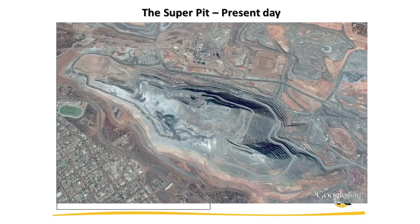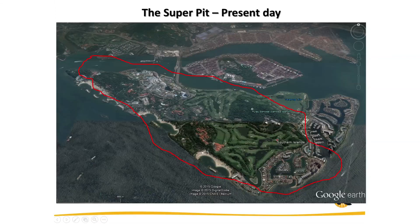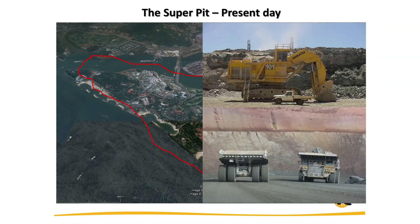This is what the Super Pit looks like today. Once again, Sentosa Island is a very handy scale bar — the pit pretty much takes up the whole island. The Super Pit is mined with massive machinery: 225-tonne trucks, and that excavator at the top has a bucket that can lift 55 tonnes — about four scoops will fill one of those trucks, and it can do that in about two and a half minutes.